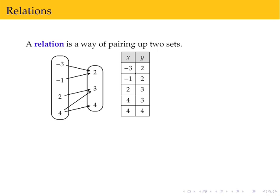We can express the pairings from the table as a set of points. So here is our set of points. Notice that all of these ways of depicting this relation, it's the same relation that they're depicting, just different ways of expressing the same thing.